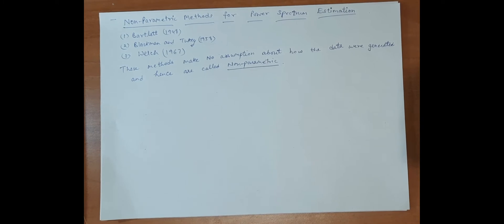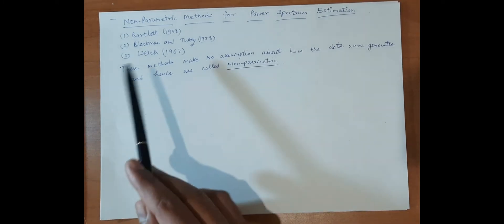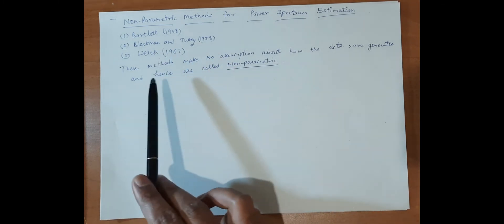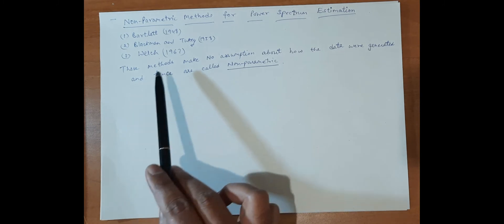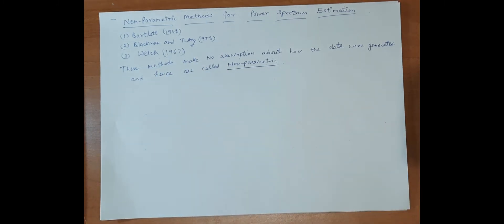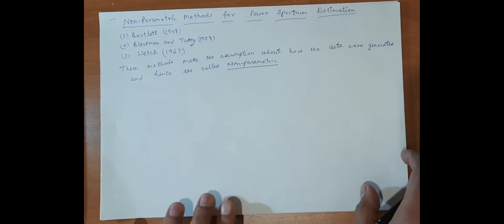Welcome friends. In this video we are going to discuss non-parametric methods for power spectrum estimation. We have three methods: Bartlett, Blackman-Tukey, and Welch. These methods make no assumption about how the data was generated, hence they are called non-parametric methods. These are the algorithms, the steps.